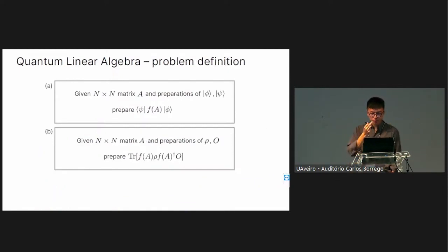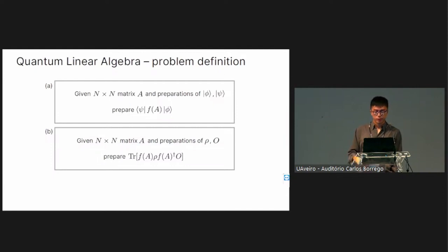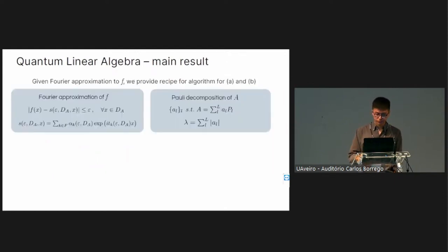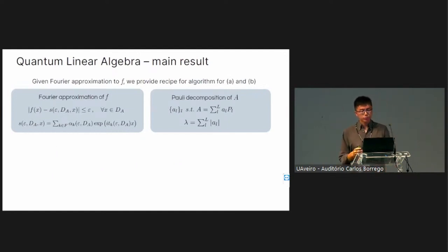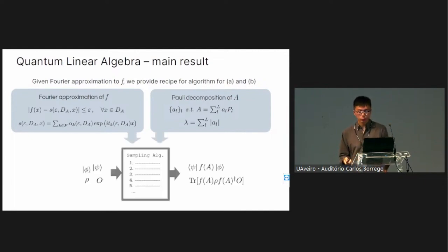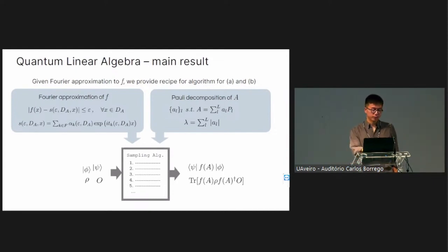We randomly compile everything in one step using previously studied circuit primitives. Concretely, the two types of problems we can address are: first, prepare the effect of f(A) and look at a state overlap property; second, if we can measure some observable O, look at more general observables. The main result: given a Fourier approximation to f and the Pauli decomposition of A, we can write down a sampling algorithm giving these two quantities, as long as we can prepare states phi, psi, and rho.